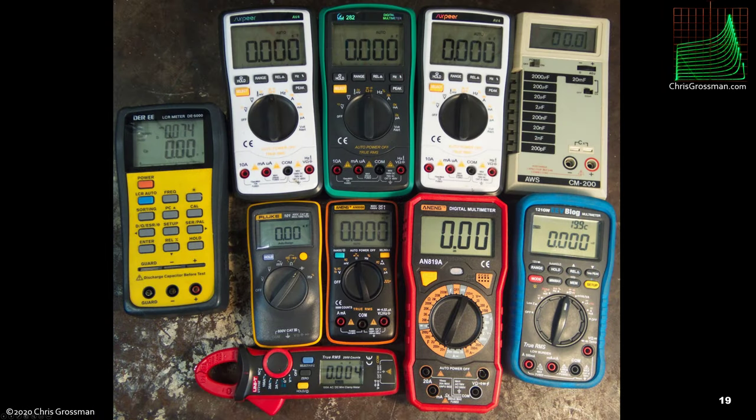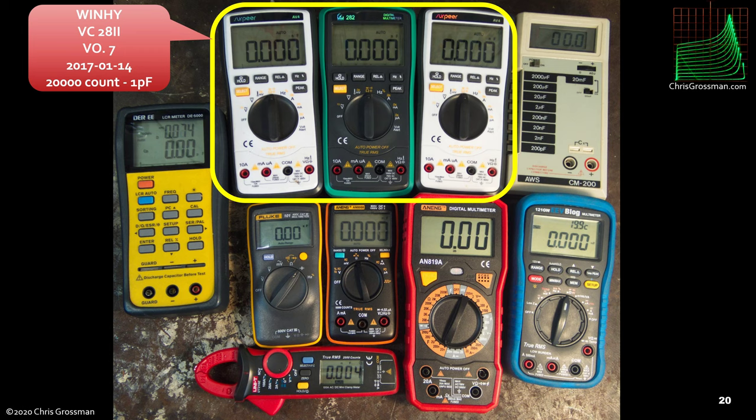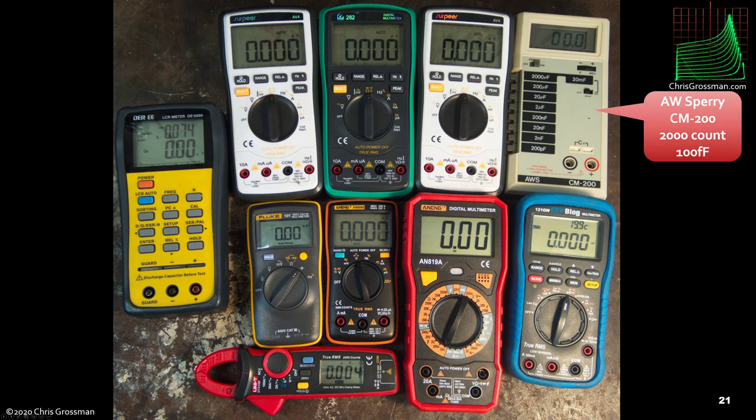These are all the other meters I have in the lab that measure capacitance. The first three up at the top are really all the same meter. They're a Win Hy VC-28-2 is the OEM, and they're rebranded by various Chinese companies and sold. They're 20,000 count meters with one picofarad resolution and I paid less than twenty dollars for each one of these. They're probably the meters I use the most in the lab. If you can pick up one of these for under 20 bucks, it's a good deal. The next meter I have is a capacitance meter that I've had for probably at least 25 years, maybe 35 years. It's a 2000 count meter manually switched, but on the lowest range it has 100 femtofarad resolution.